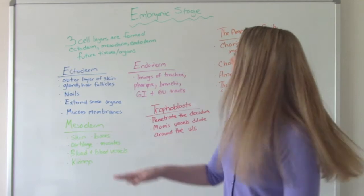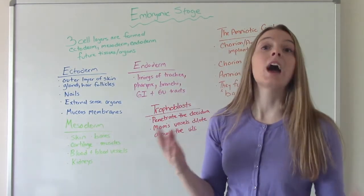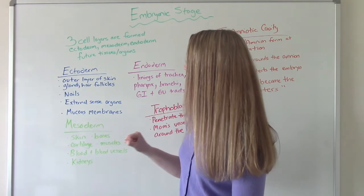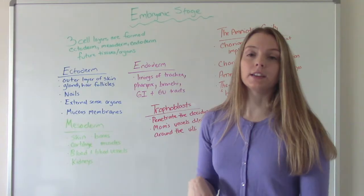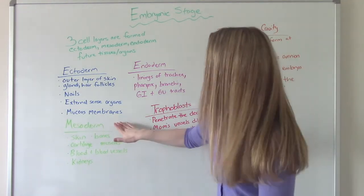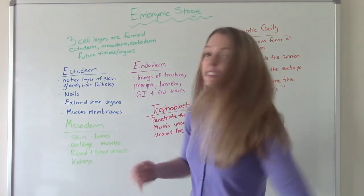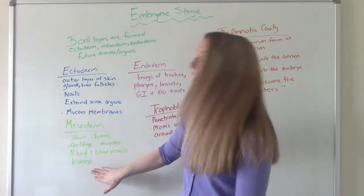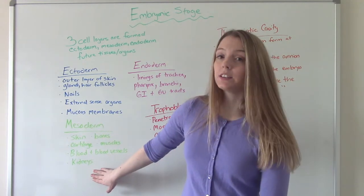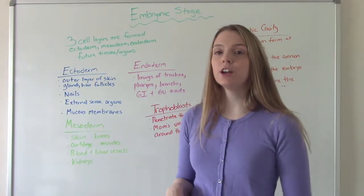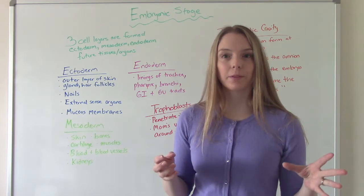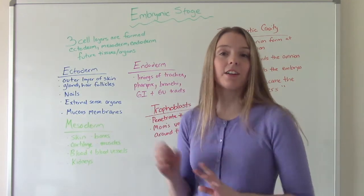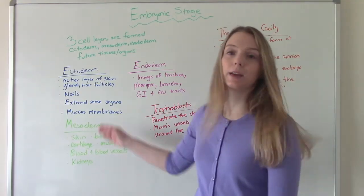During weeks two and three, three cell layers are formed: the ectoderm, the mesoderm, and the endoderm — these are going to be the future tissues and organs. The ectoderm will become the outer layer of skin, glands, hair follicles, nails, external sense organs, and mucous membranes of the mouth and anus. The mesoderm will become the skin, bones, skeleton, cartilage, muscles, blood and blood vessels, and the kidneys. A fun fact: your kidneys and ears are being developed at the same time at the mesoderm level — that's why they're similar in shape, and people born with kidney issues often have hearing issues too.